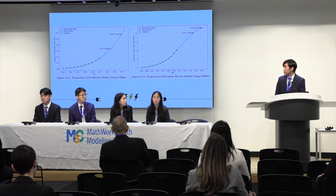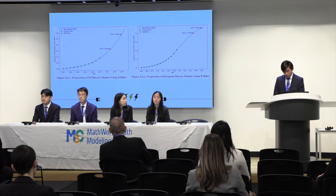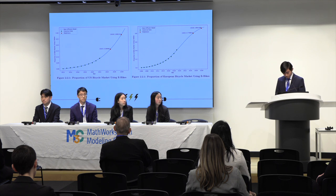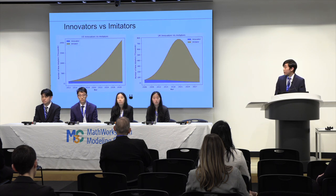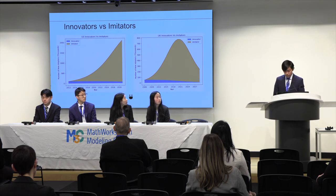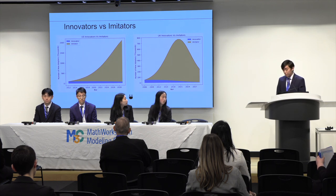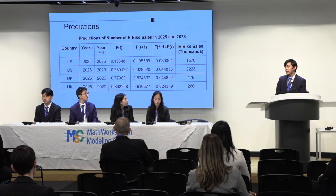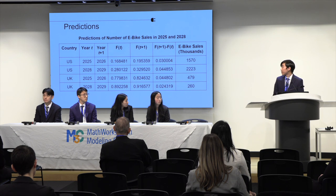The graphs show that e-bike growth in the US is still accelerating, while in the UK, e-bike sales have passed an inflection point and are slowing down as the market becomes saturated. These graphs here show the rate of change with respect to time in e-bike usage. We can see that the influence of innovation declines over time, while the role of imitation increases at first, but decreases once the majority of the market has adopted the product. To calculate e-bike sales in any given year, we find the increase in the proportion of e-bike users from F of T to F of T plus one, then multiply by the size of the market to get the total e-bike sales.